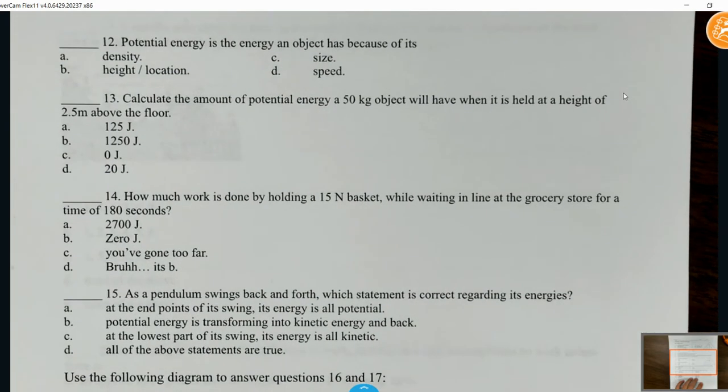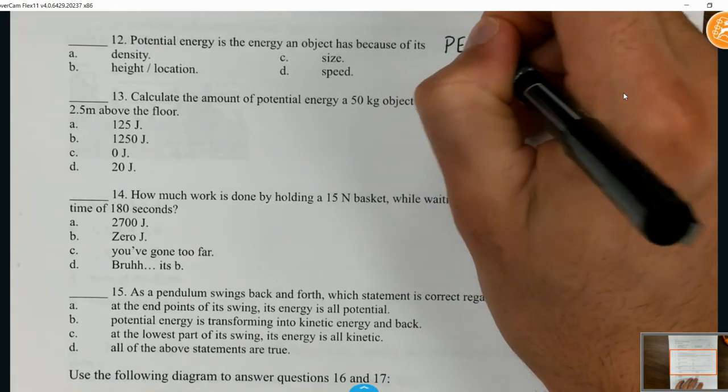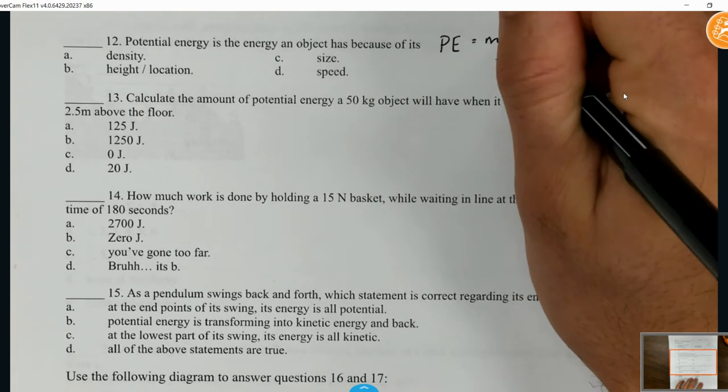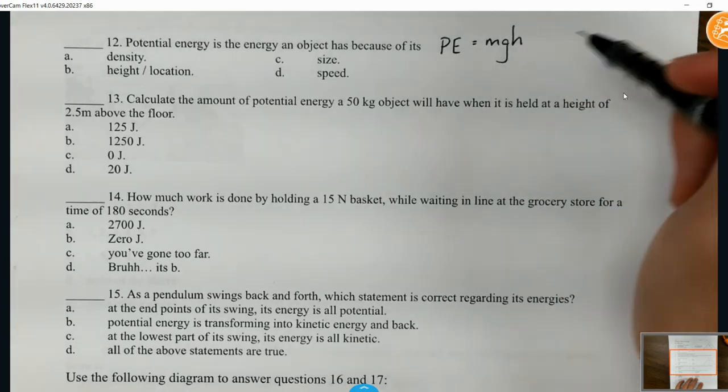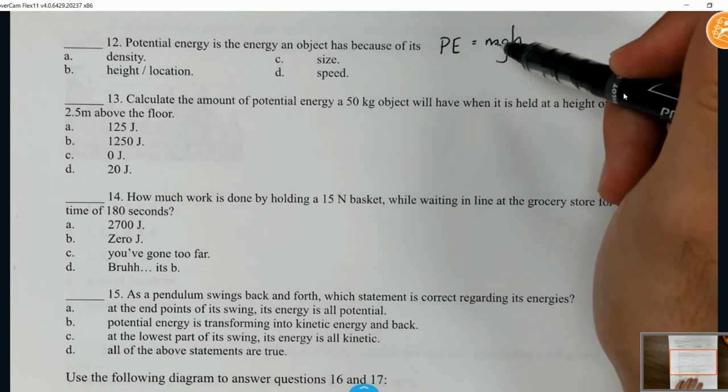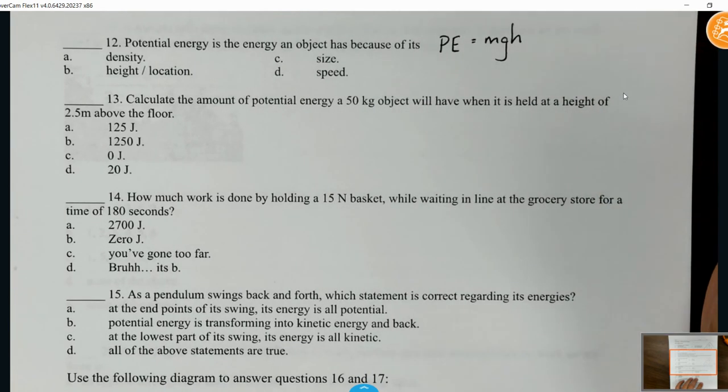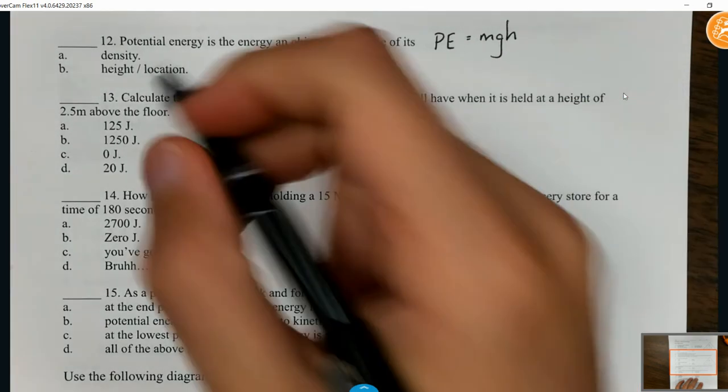Potential energy - what about this one? An object's potential energy, we're talking gravitational potential energy, depends on its height and its location. Potential energy is mass times gravity times height. Its position, height, location - that's the factor. Speed is not in the equation. Size can be tricky because you might think the bigger the object, the more mass, but that's not necessarily true. A basketball has more mass than a big blown up beach ball. Size is relative, doesn't always mean more mass, so we're looking at B.